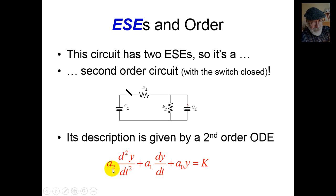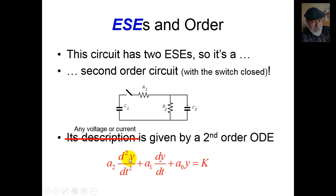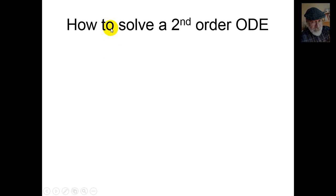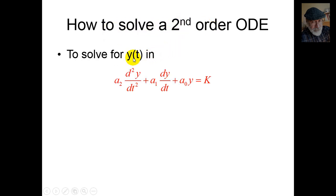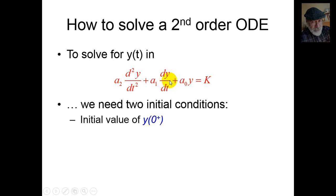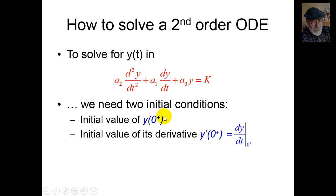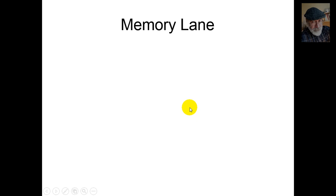Any voltage or current in that circuit is given as the solution of an ordinary differential equation of order 2. Think of Y as the voltage across a capacitor, or the current through a resistor — any parameter in that circuit leads to a second order differential equation. To solve for Y(t), we need two initial conditions: the initial value of Y(t) at 0+, and the initial value of dY/dt at 0+.